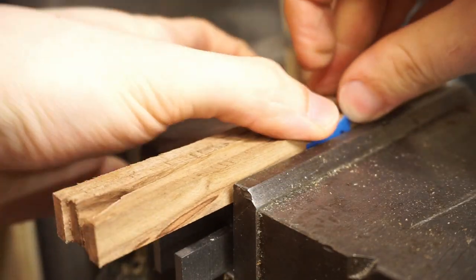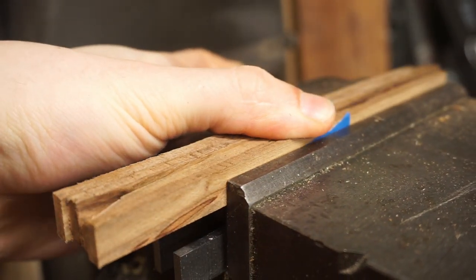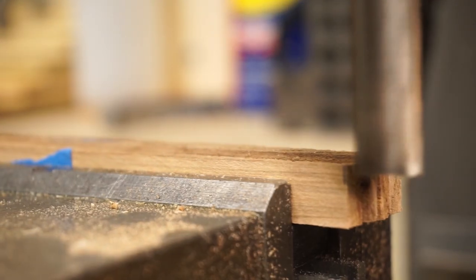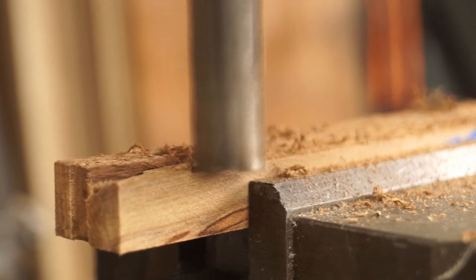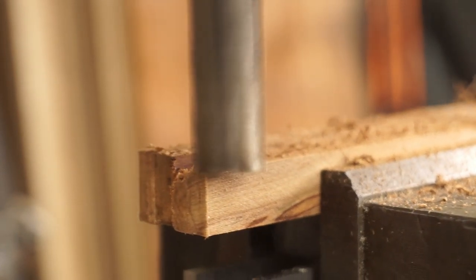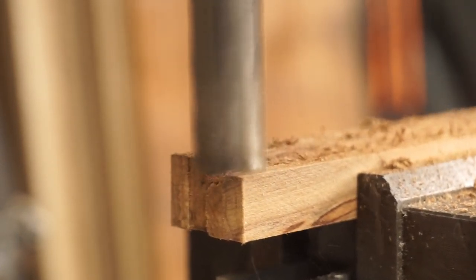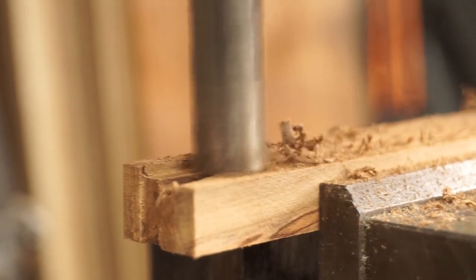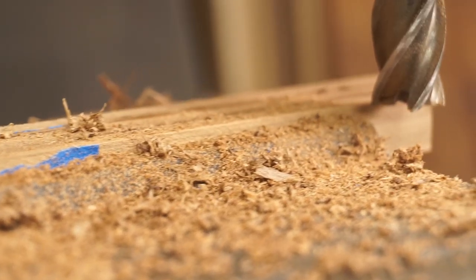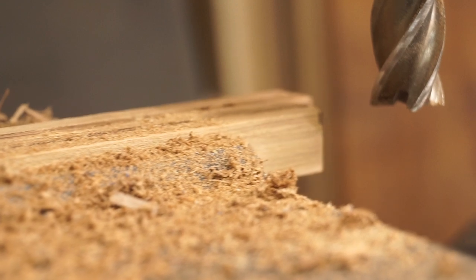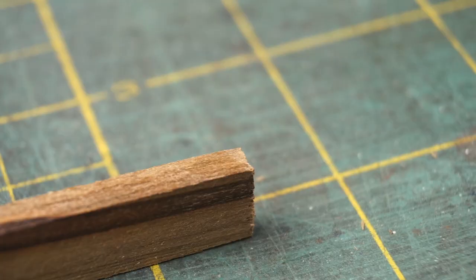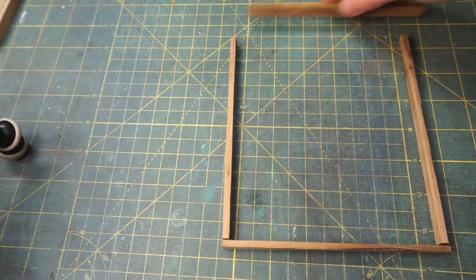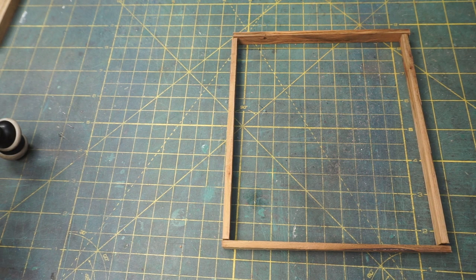Lastly on the mill, I'll square up the one remaining side. The width of these parts isn't super critical, but what is critical is that all the pieces are the same width. I'm going to be gluing these pieces to each other, and I want the joints to be as flush as possible. Here's the door frame I ended up with.